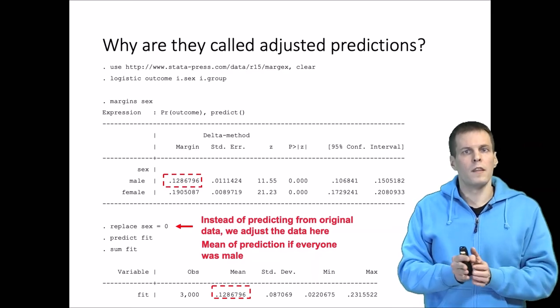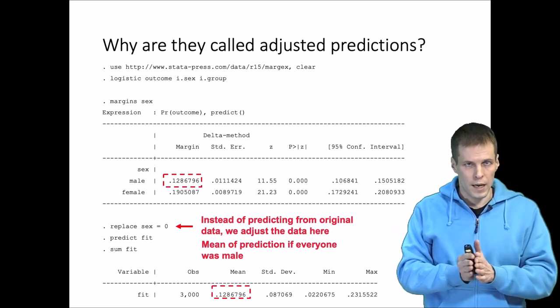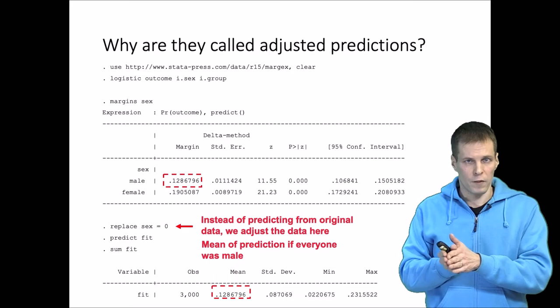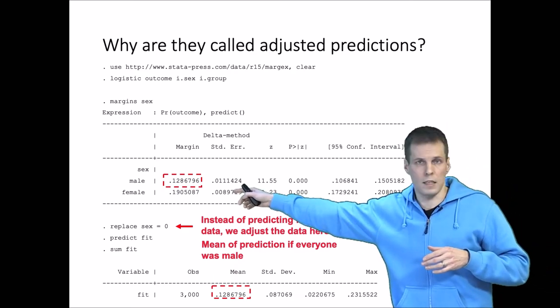Then we adjust sex again to one so that everyone is female, and then we calculate predictions, we calculate the mean of the predictions, and that's our margin here in Stata.